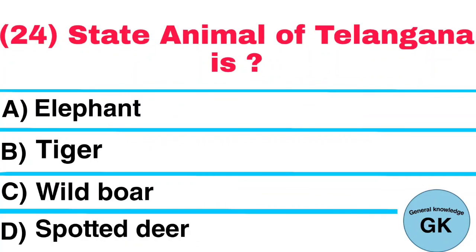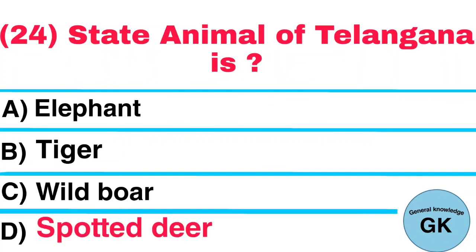Question Number 24. State Animal of Telangana is: A. Elephant, B. Tiger, C. Wild Boar, D. Spotted Deer. Answer: Spotted Deer.